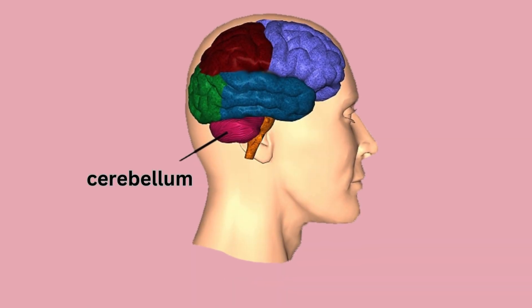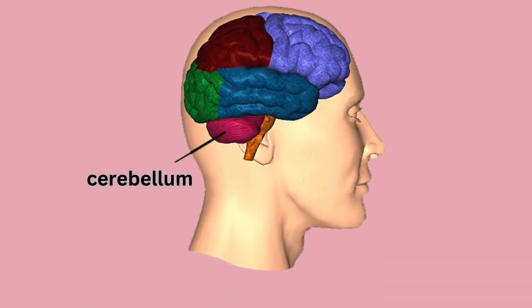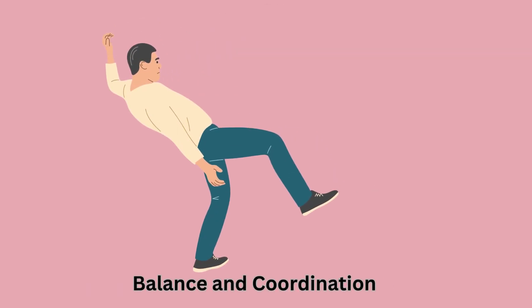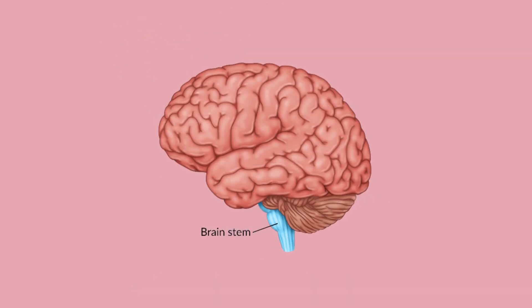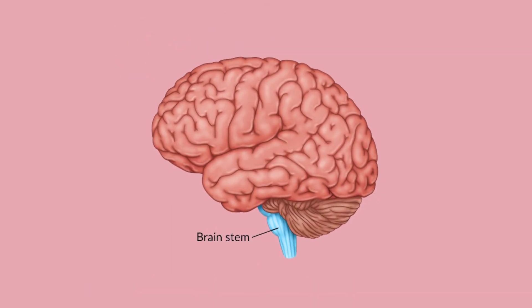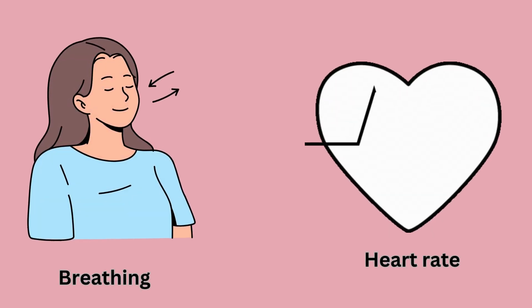Besides these lobes, areas like the cerebellum control balance and coordination, and the brainstem governs automatic functions vital to survival, such as breathing and heart rate.